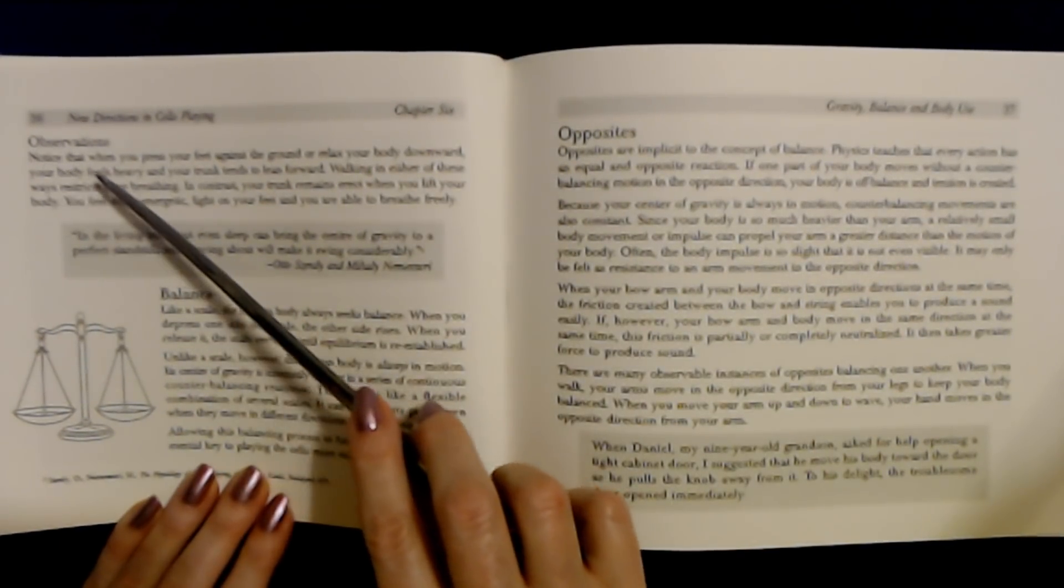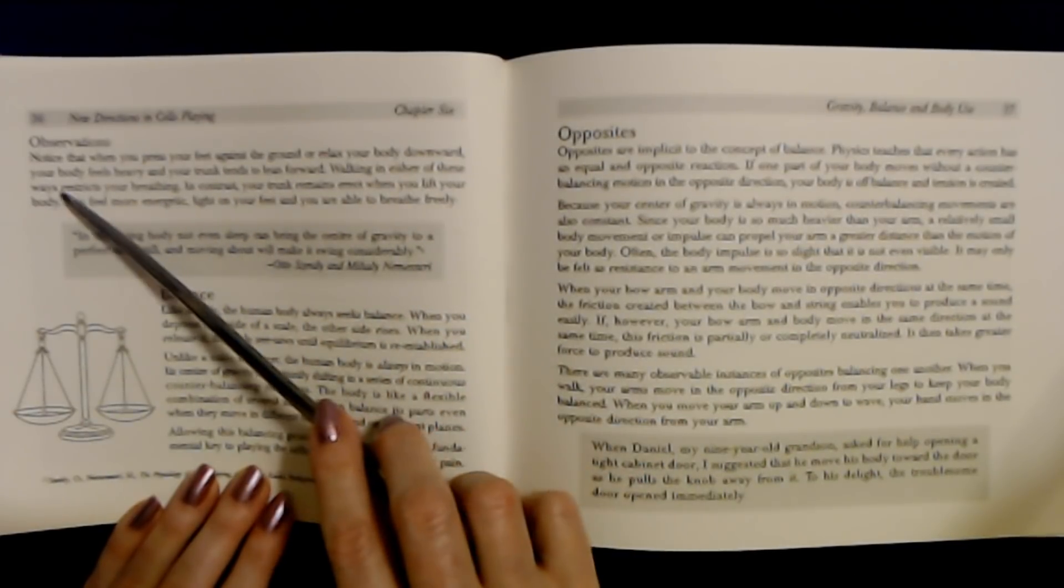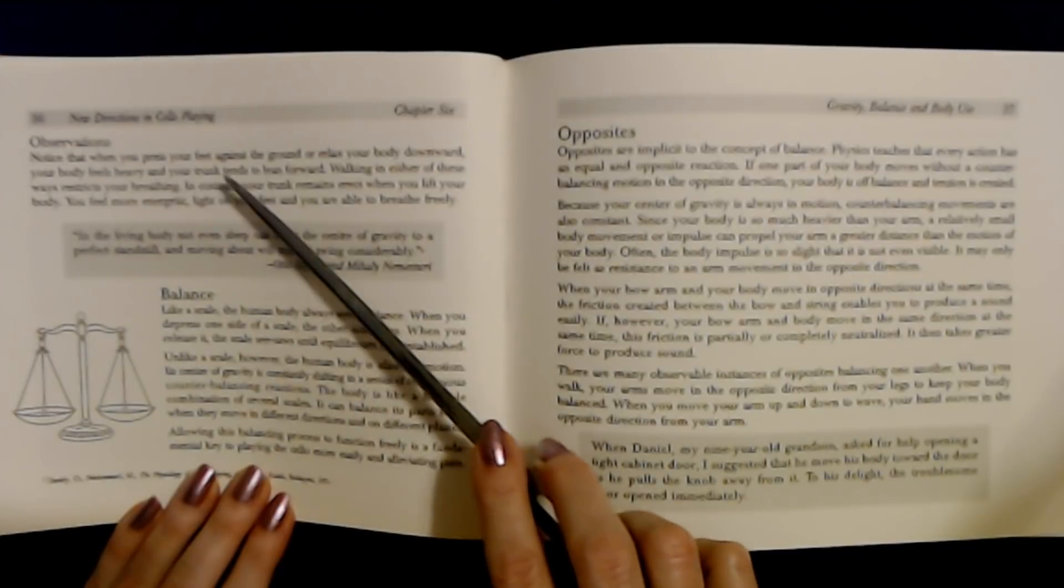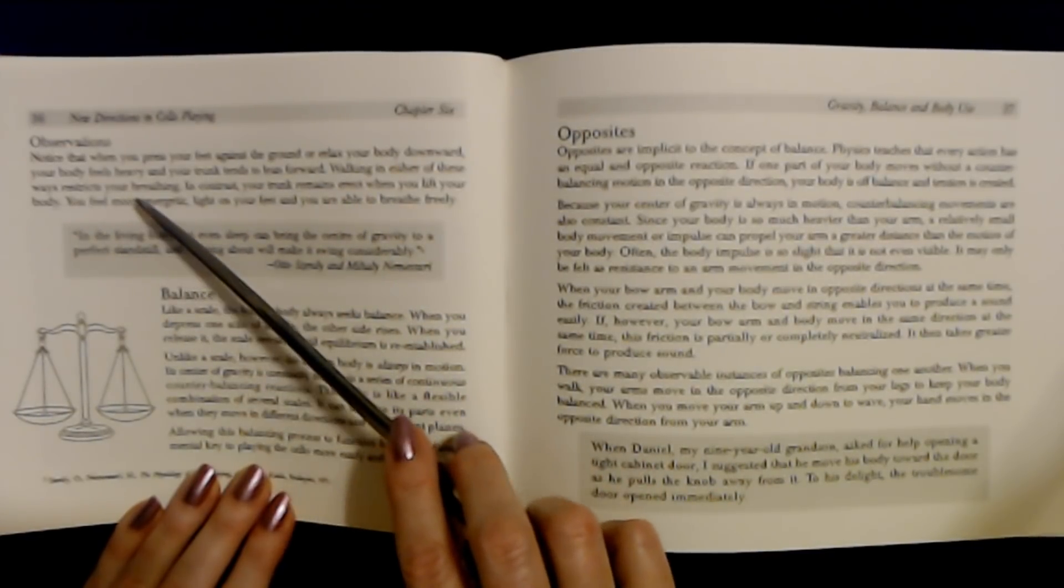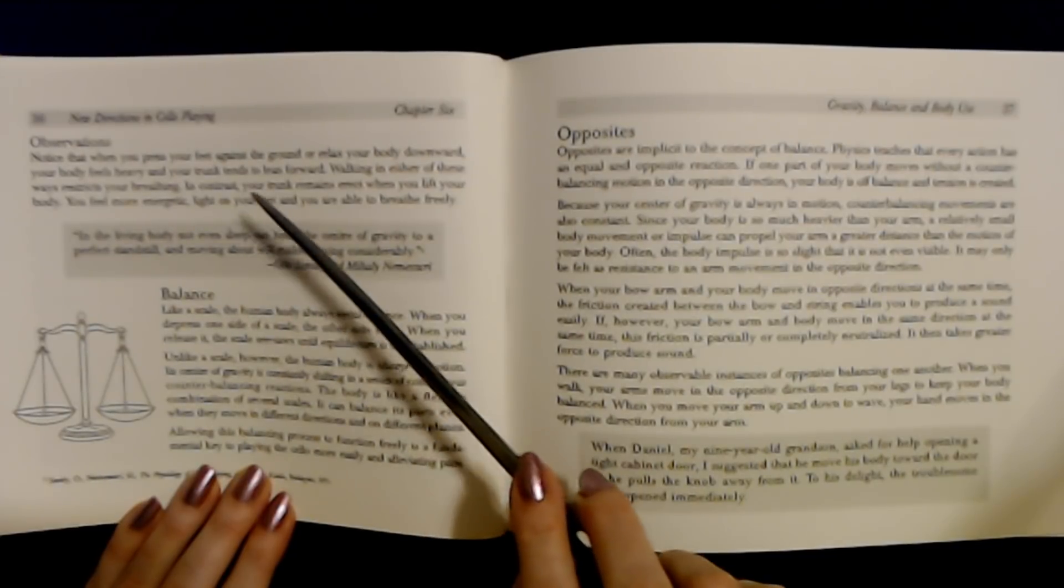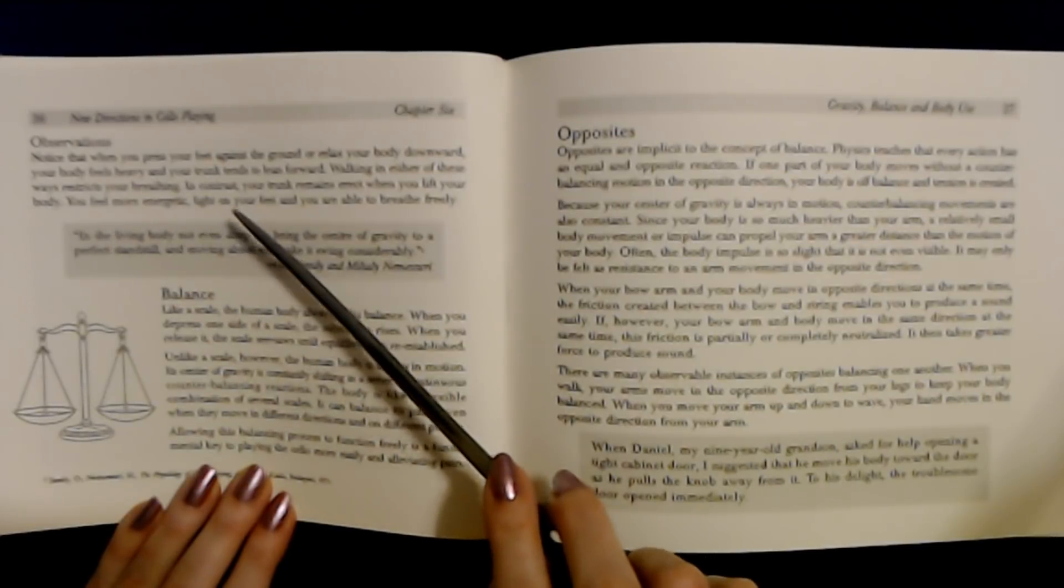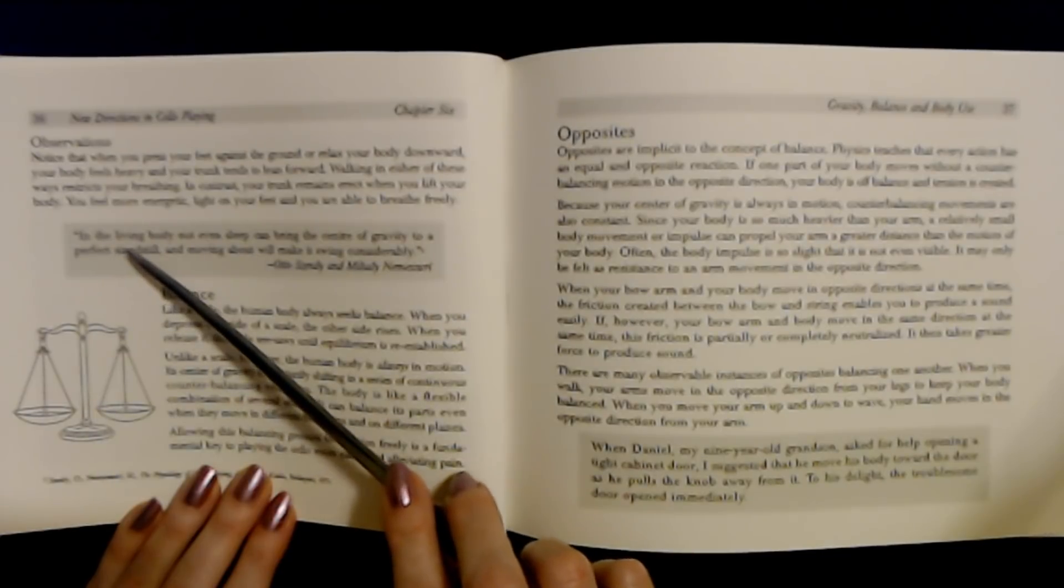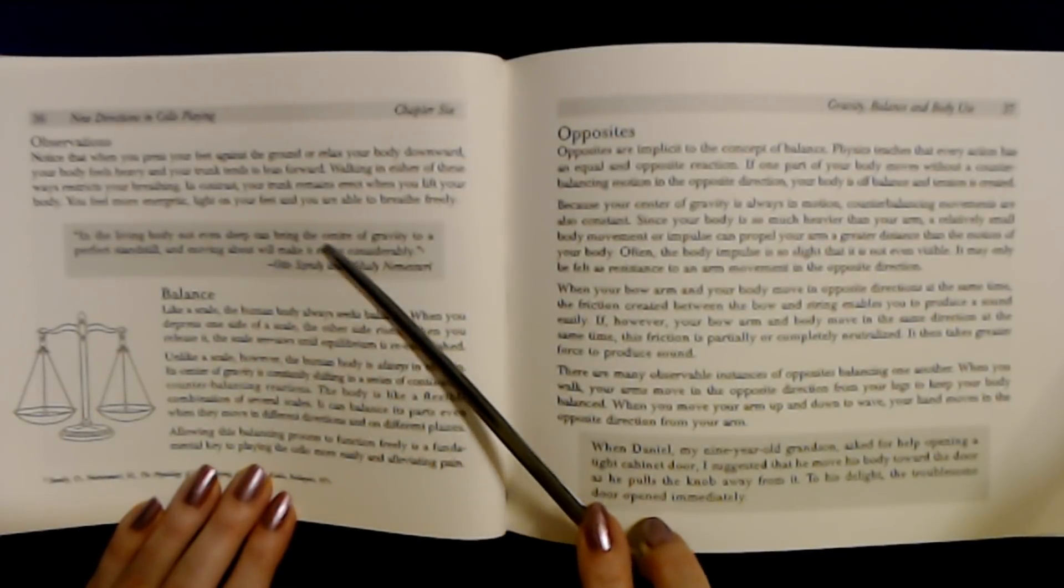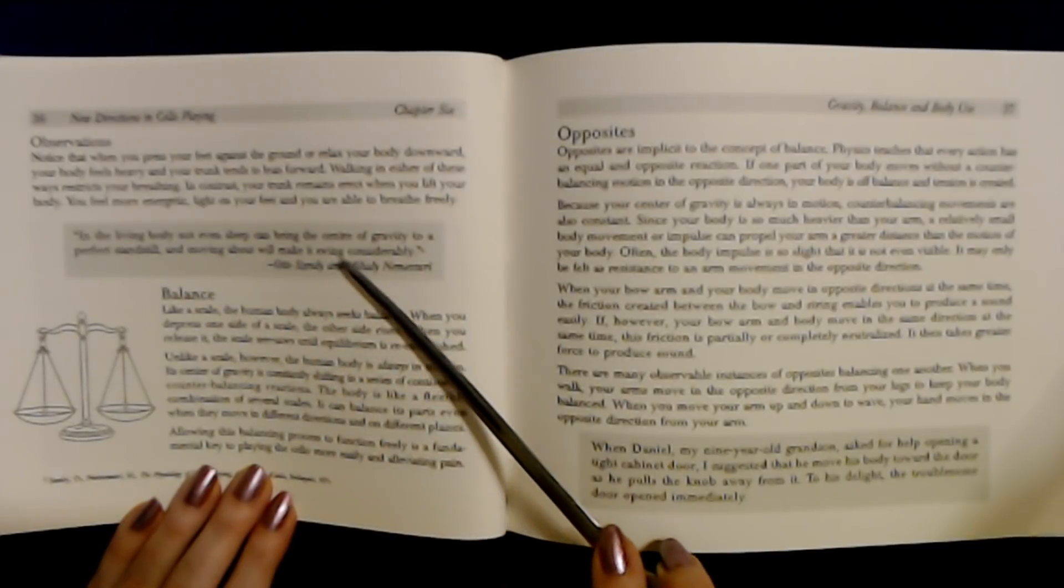Observations. Notice that when you press your feet or relax your body downward, your body feels heavy. Your torso will lean forward. Walking in either of these ways restricts your breathing. In contrast, your torso remains erect when you lift your body. You feel more energetic, light on your feet. You're able to breathe freely.